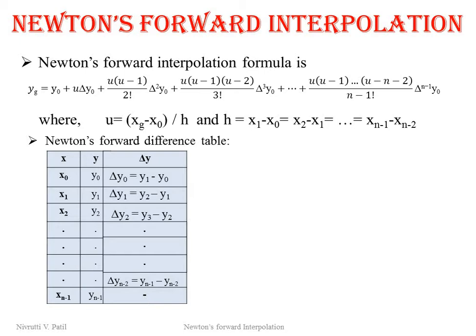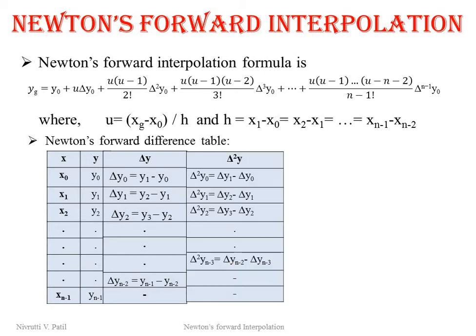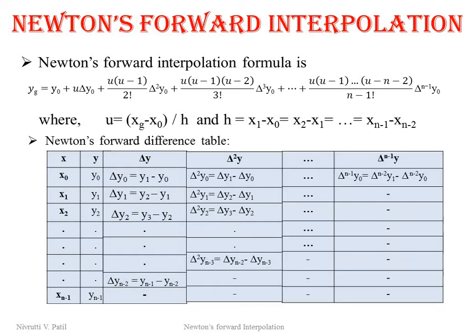Similarly, the third column is prepared for the second-order differences in the same fashion, and this process is repeated up to the (n−1)th order. To calculate yg we only require the first row values: y0, Δy0, Δ²y0, and so on up to Δ^(n−1)y0.